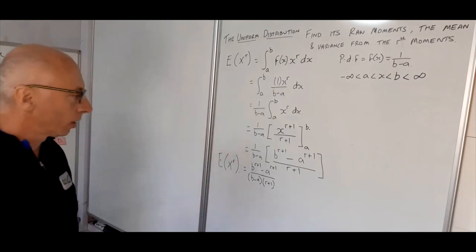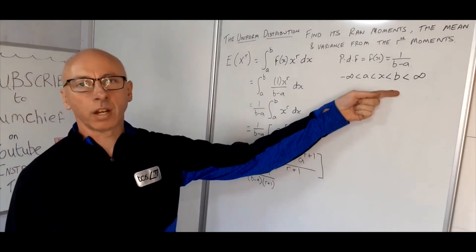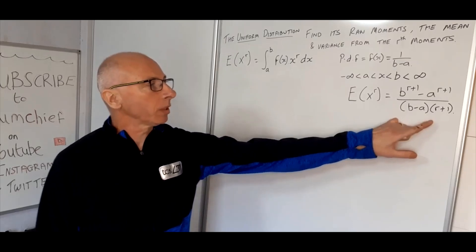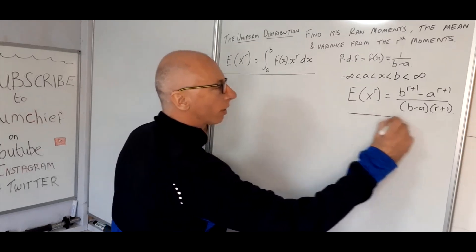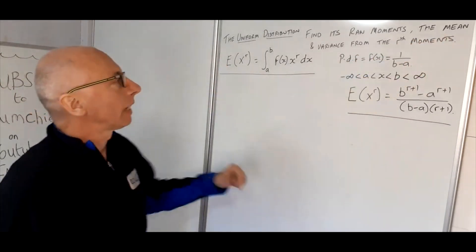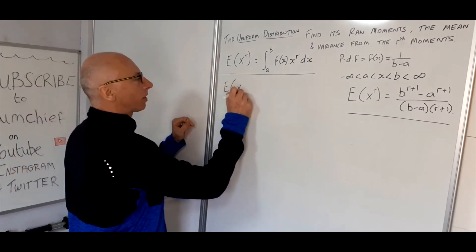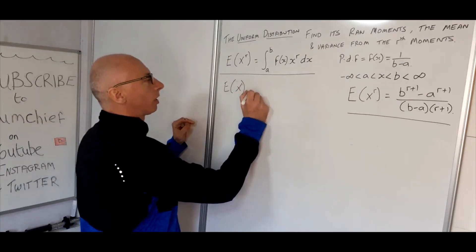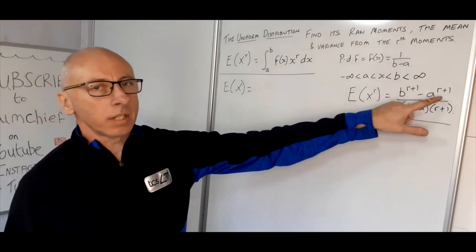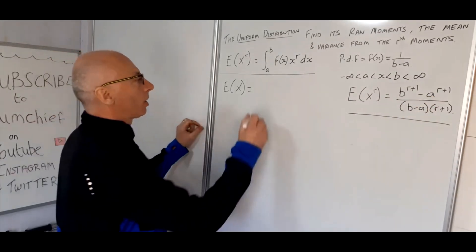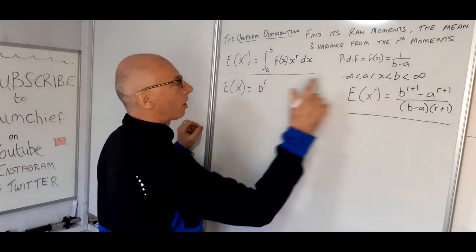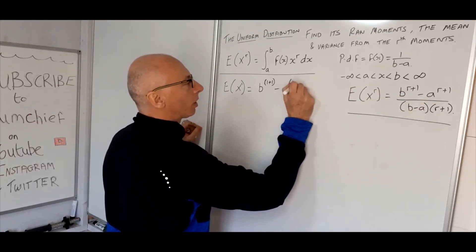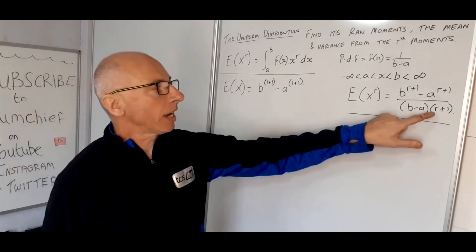Now I'm going to write the solution on the side and continue by finding the mean. The mean is E[X], which is the expected value of x^1, so r = 1. Using our raw moments formula with r = 1 substituted in, we get [b^(1+1) − a^(1+1)] over [(1+1)(b − a)], which is [b² − a²] over [2(b − a)].